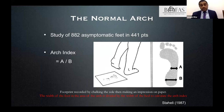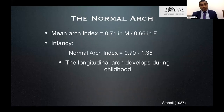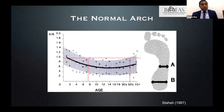The normal arch index in a man is around 0.7 and in a woman is 0.6. The arch develops as we grow from childhood into adulthood, and then changes again as we age. Both children and older people are generally more flat-footed than an adult male or female, and this needs to be taken into account when assessing somebody for a flat foot.